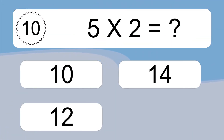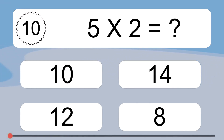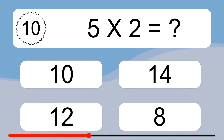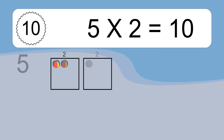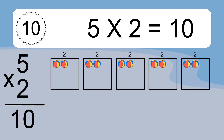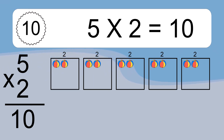5 x 2 equals 10. We have 5 boxes, and each box has 2 colorful balls inside. If you count all the balls in all the boxes together, you will have 5 x 2 balls. This equals 10 balls.